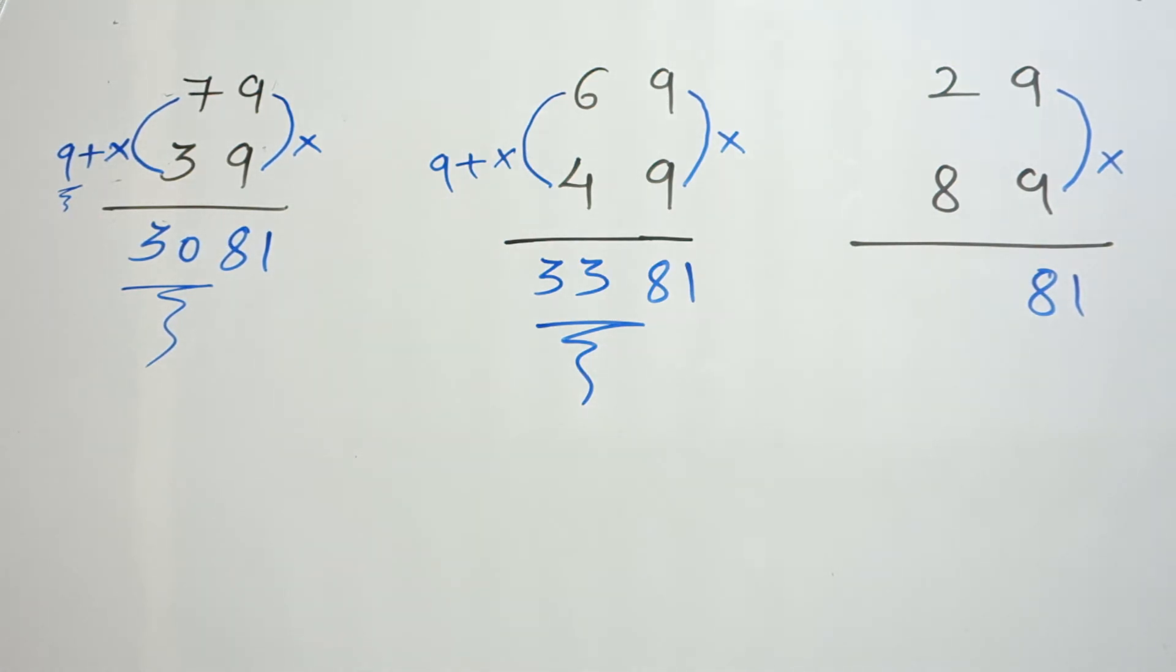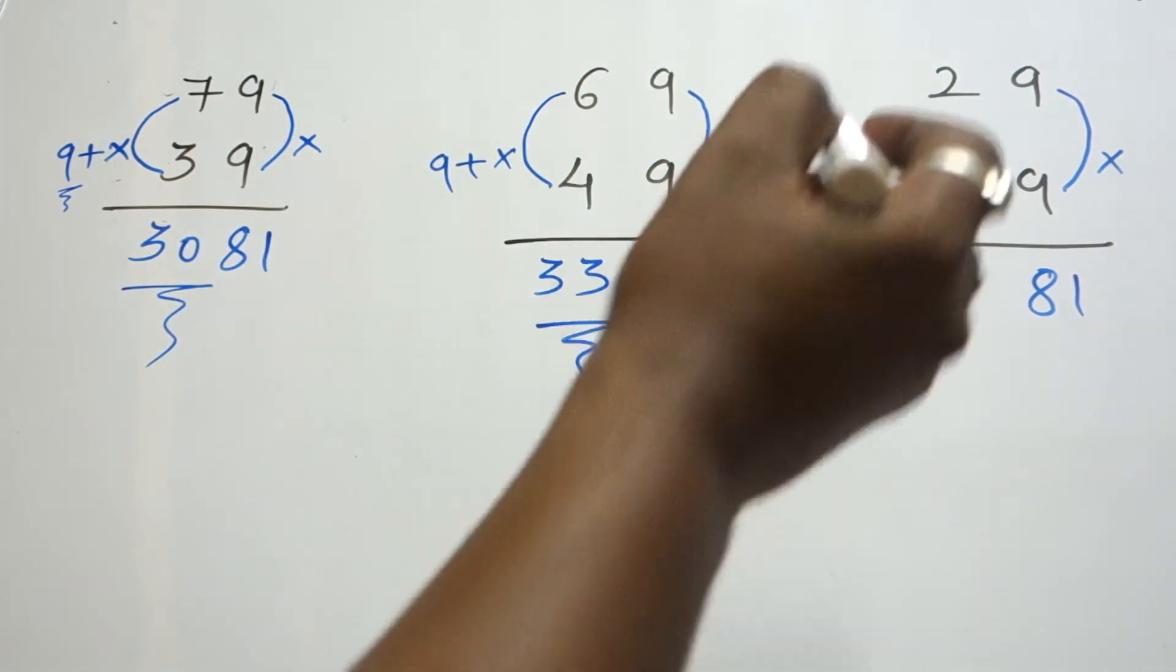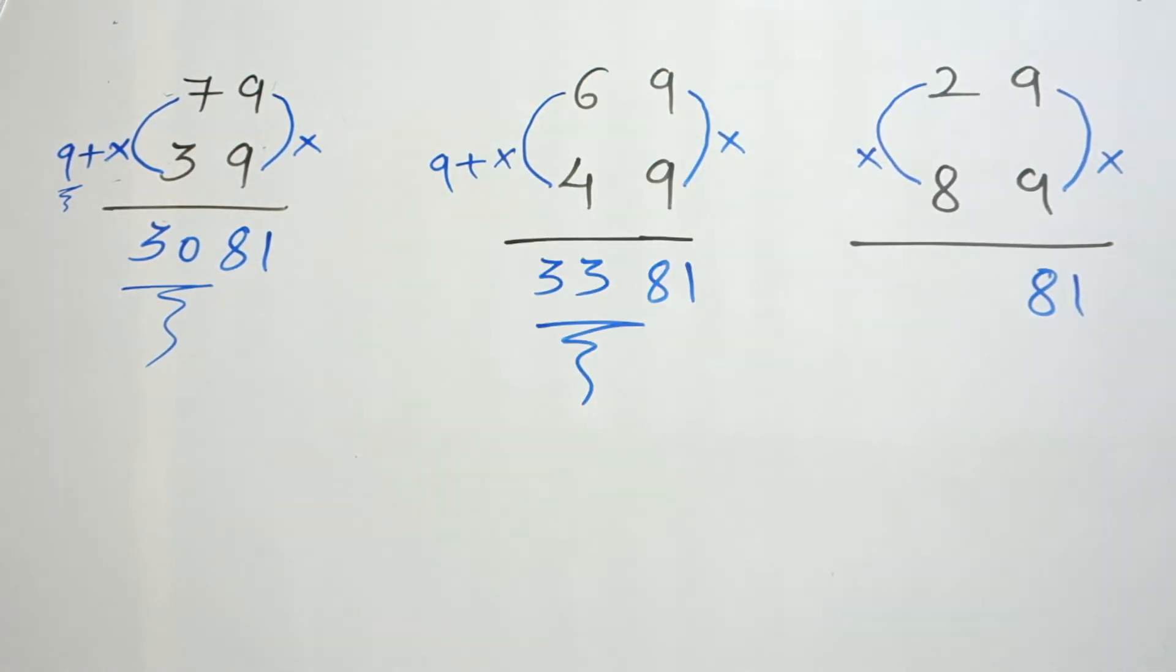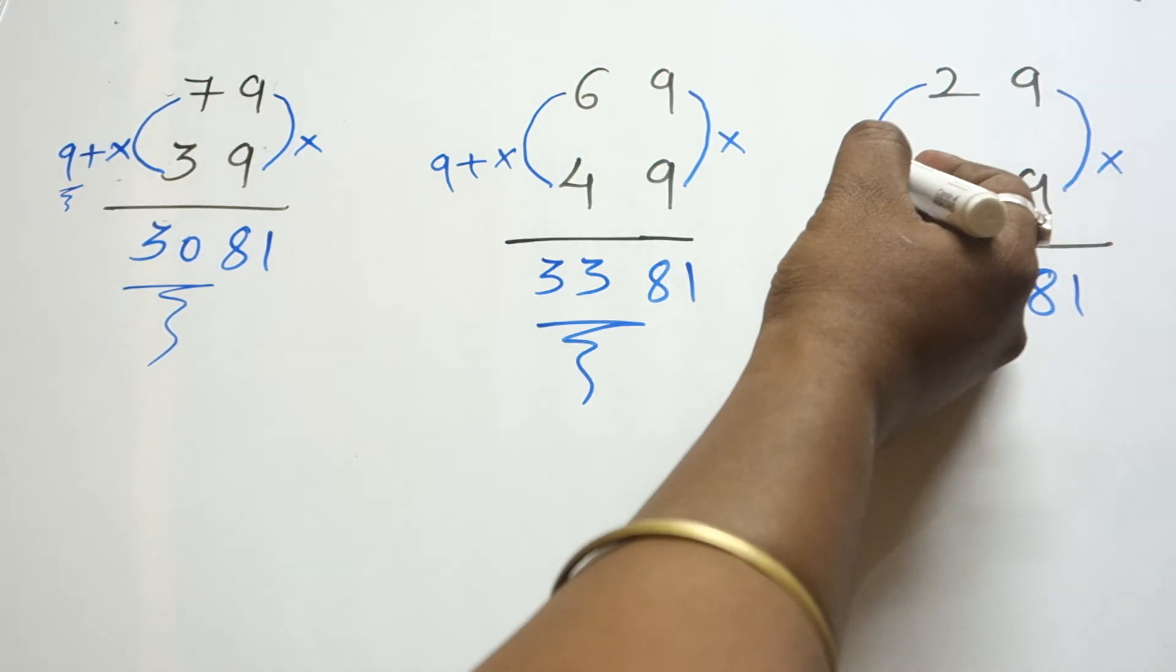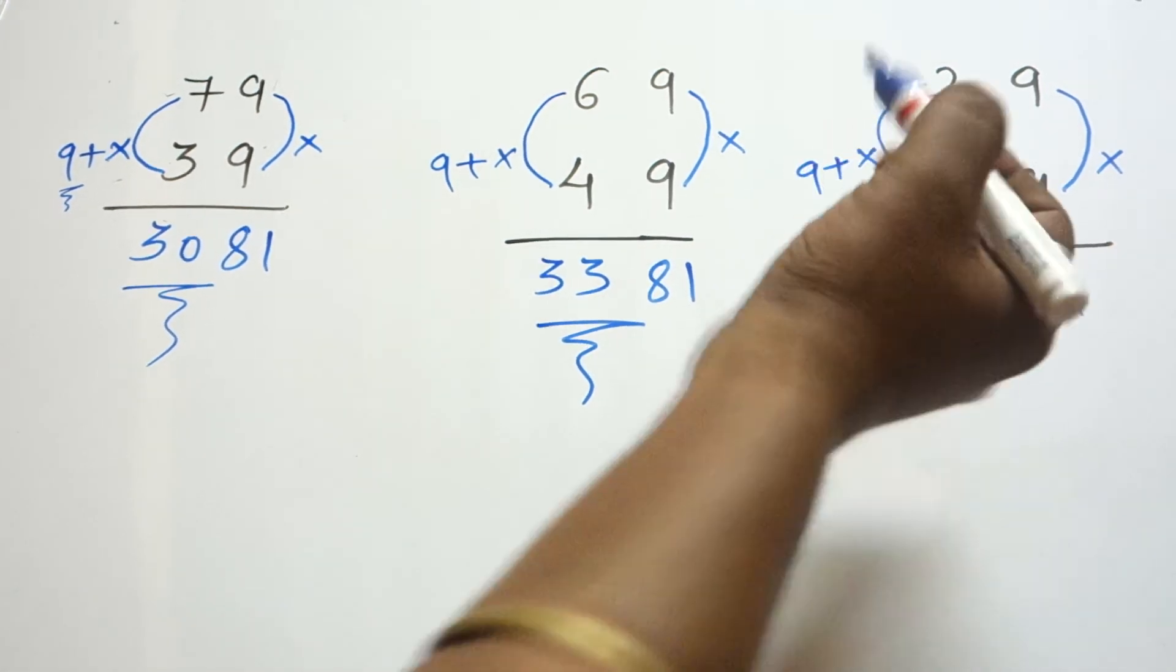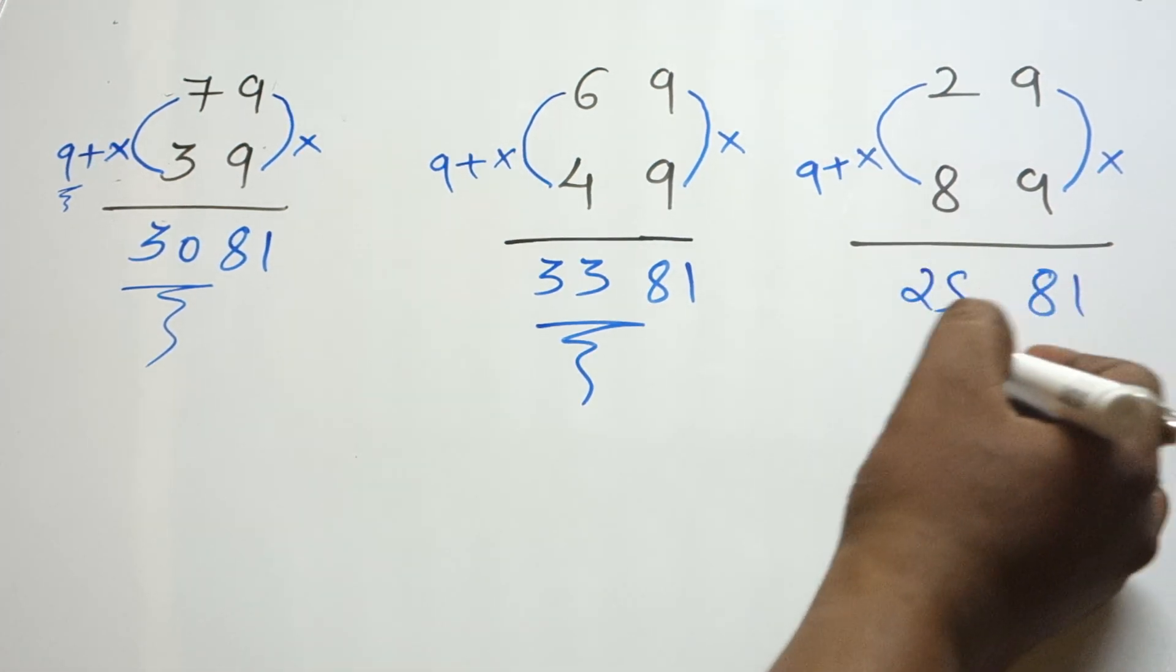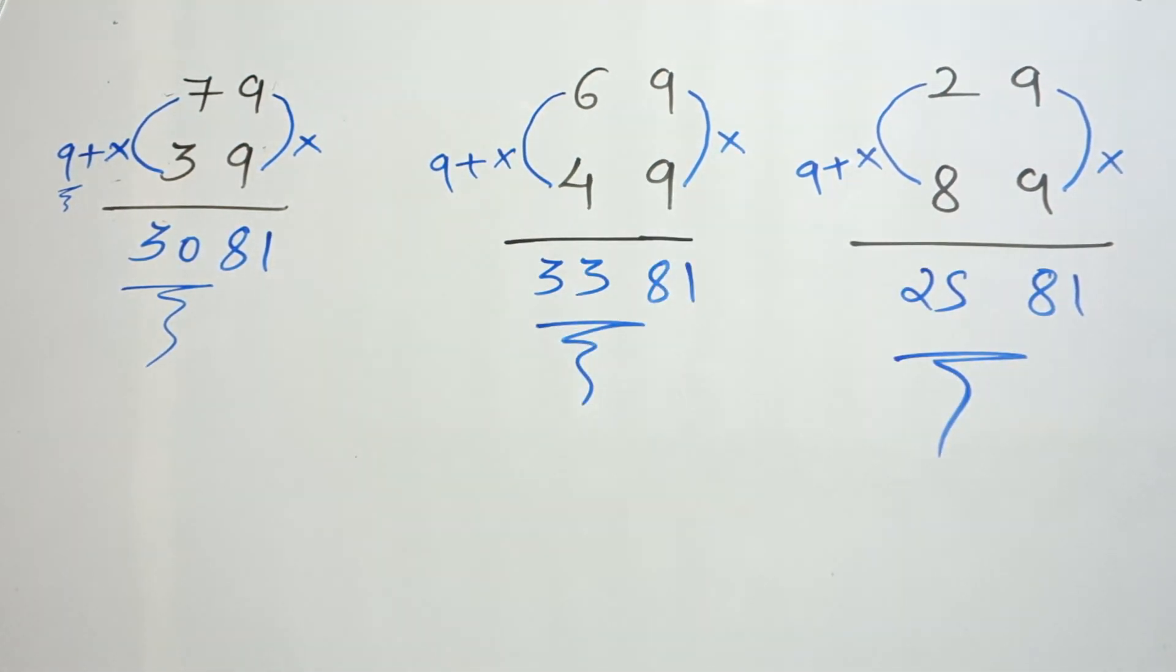Let's move on to the third example. Apply the same concept, same fundamental: 2 times 8 is 16, apply the same concept, add 9 to it, 16 plus 9 is 25. So when you multiply 29 into 89, you will get the answer 2581.